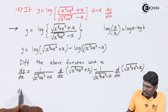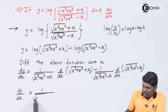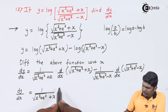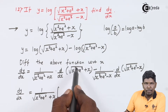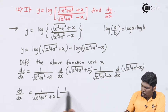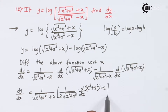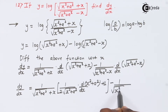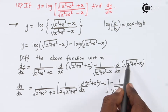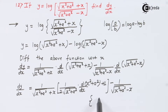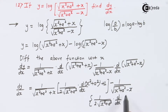Now expanding: dy by dx equals 1 upon under root x squared plus a squared plus x, followed by the derivative of under root x squared plus a squared. This is a composite function compared with root x, so its derivative is 1 upon 2 under root x squared plus a squared, into the derivative of x squared plus a squared, plus 1. Minus 1 upon under root x squared plus a squared minus x, into 1 upon 2 under root x squared plus a squared, into the derivative of x squared plus a squared, minus 1.